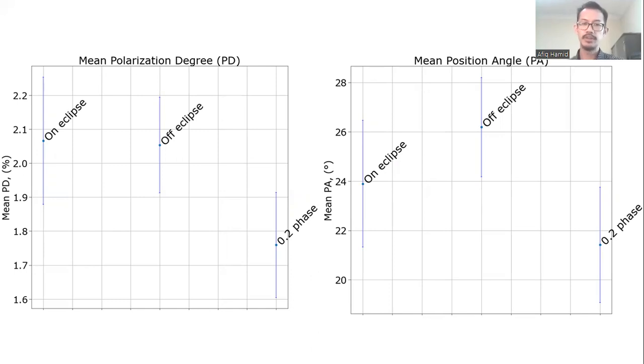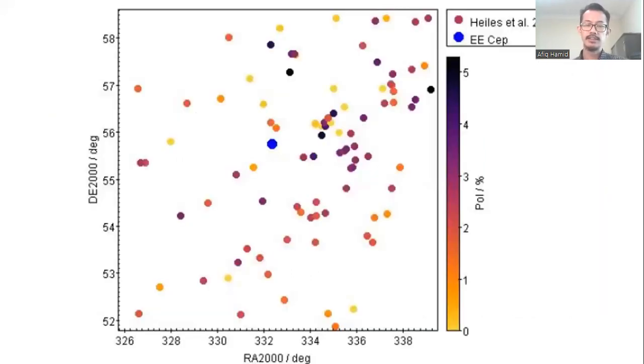On top of this, we are able to study the contributions of interstellar polarization using the HILAS 2020 catalog, and found that the PD towards EE Cep is 2.4 plus minus 0.3 percent, which is nearly consistent with our off-of-eclipse values. So one remaining to do for us is to correct for this interstellar polarization in all of our results.